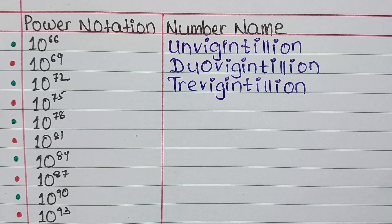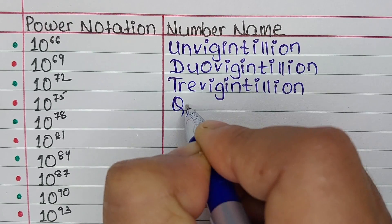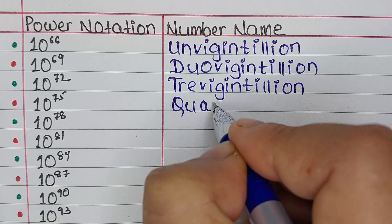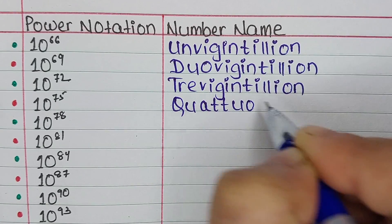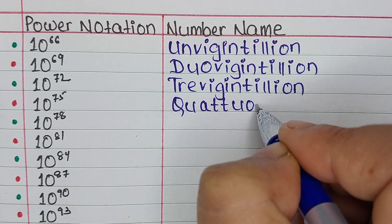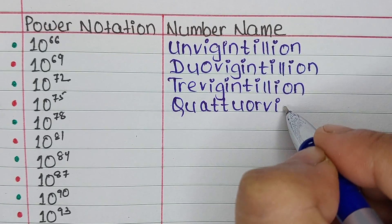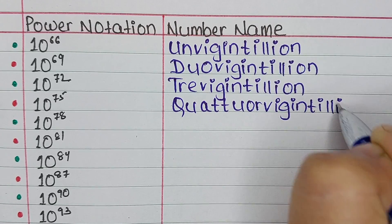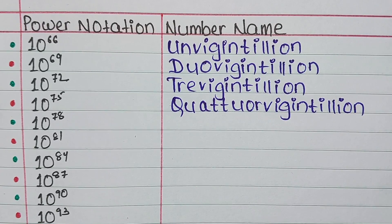Next is 10 to the power 72. It is called Trivigintillion. Next is 10 to the power 75. And it is known as Quattuorvigintillion.